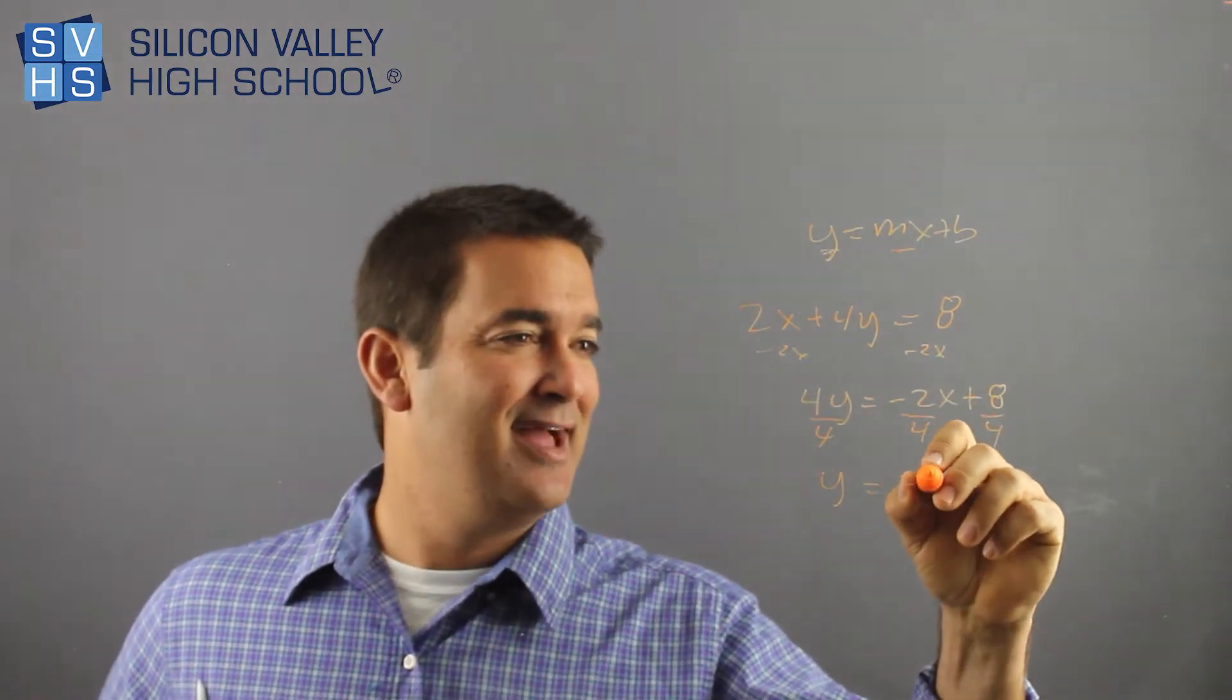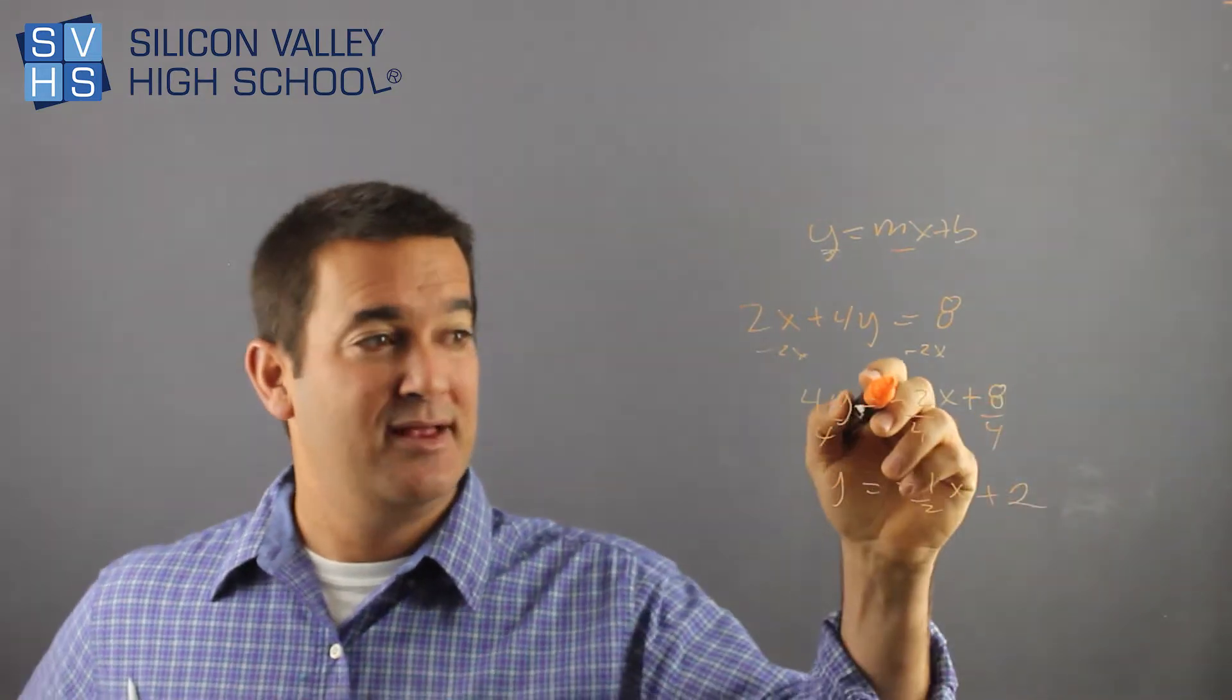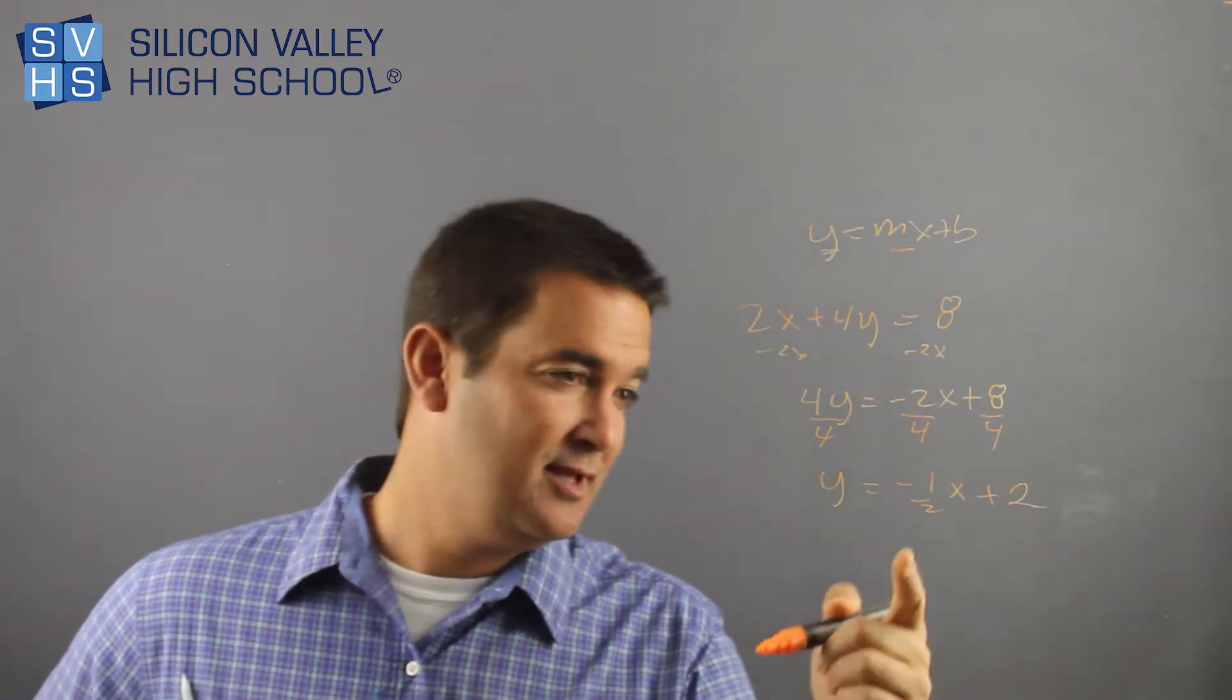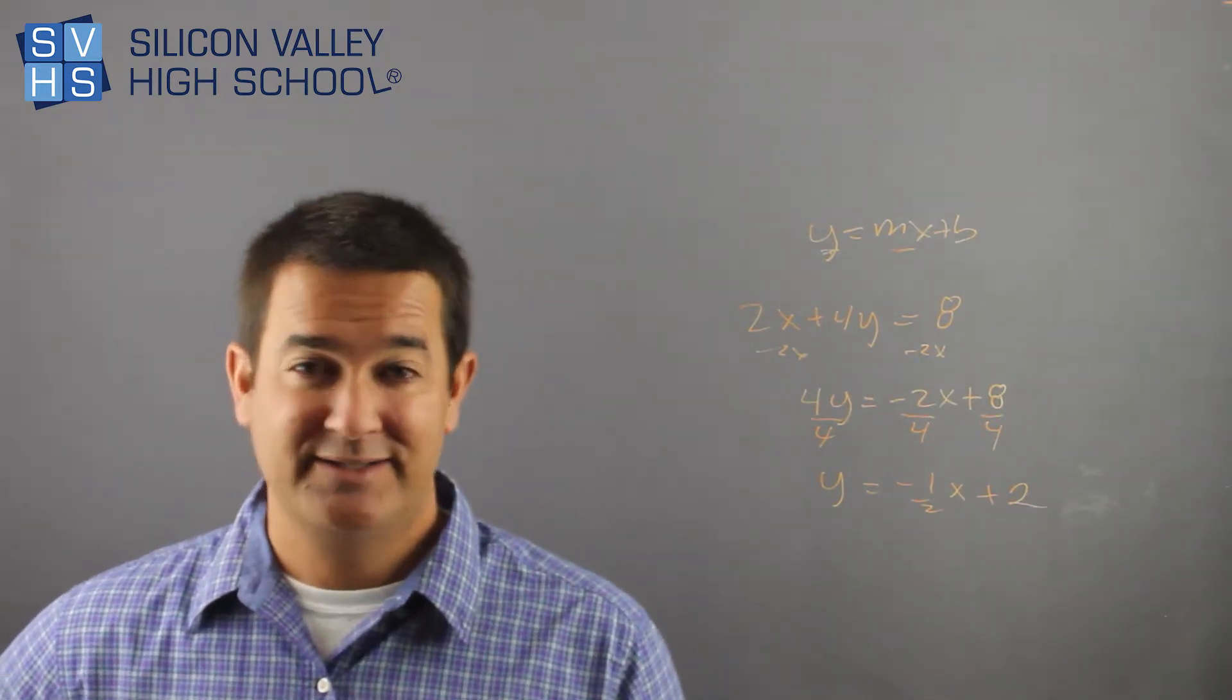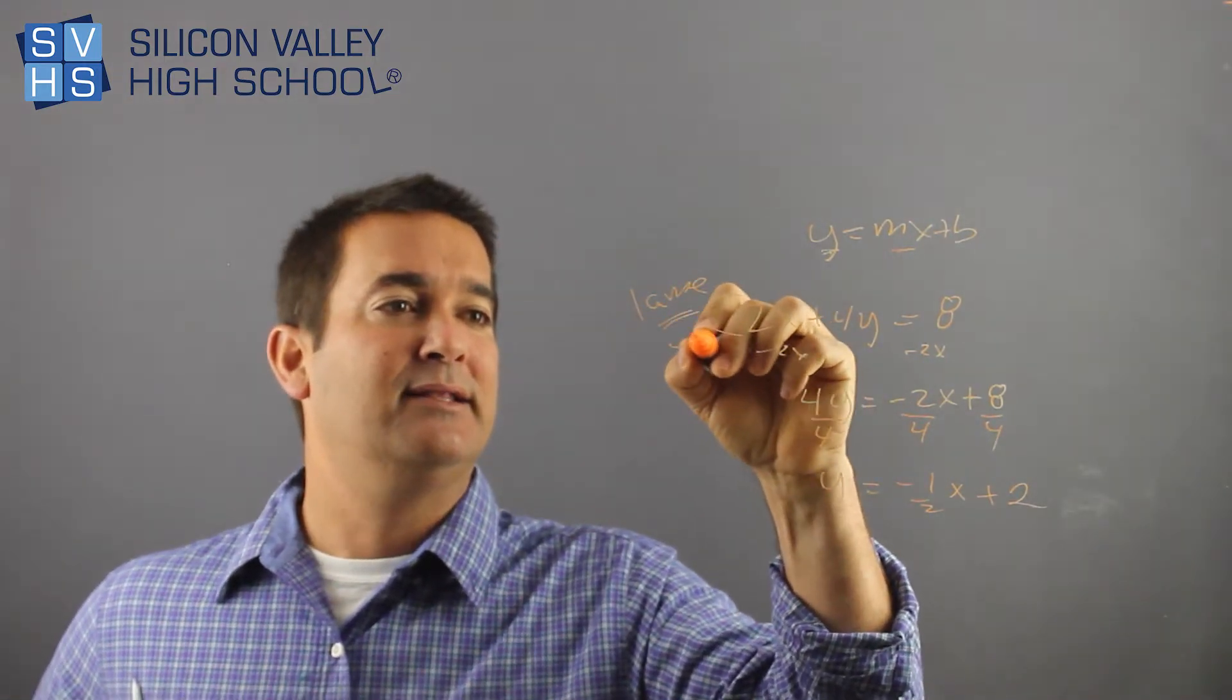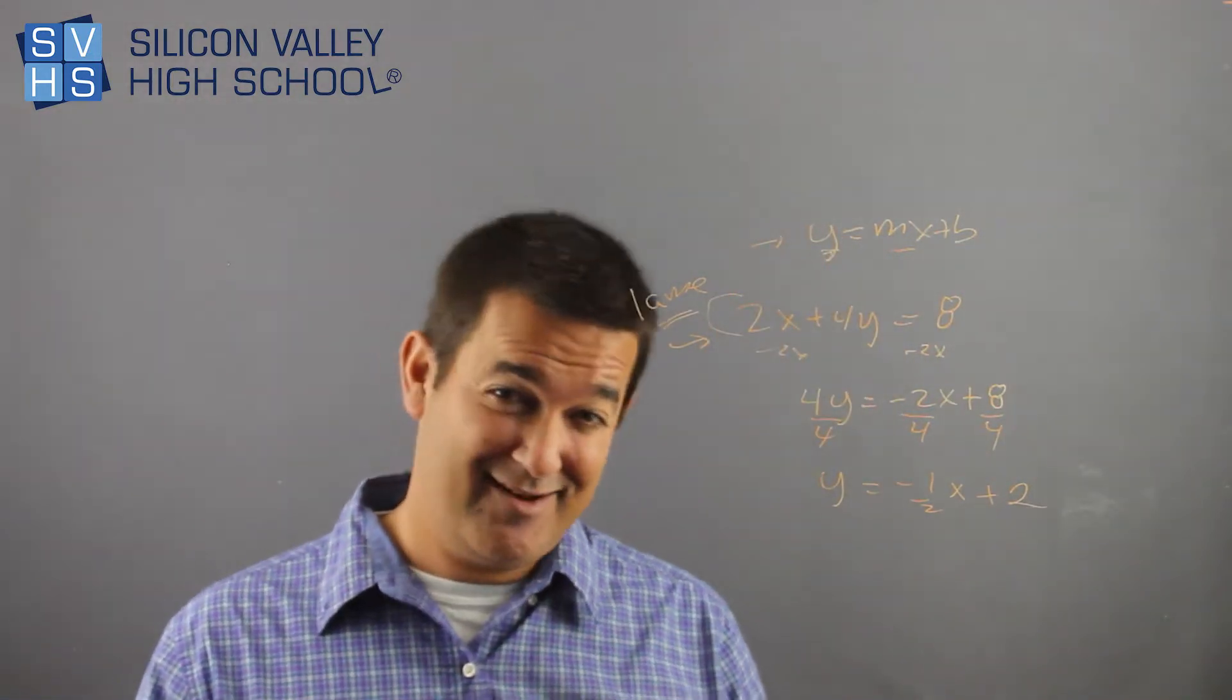So now I have y =, reducing this in my head, I have -1/2x + 8 divided by 4 is 2. Negative 2 over 4 is negative 1 over 2. So now, what's my slope? Negative 1/2. What's my y-intercept? 2. So this is lame. I'll even diagram that. Lame because it's not in the right form yet. So you have to do a little math and everybody gets annoyed.